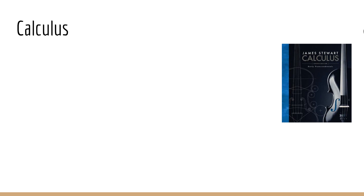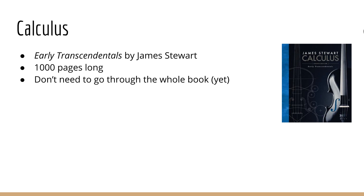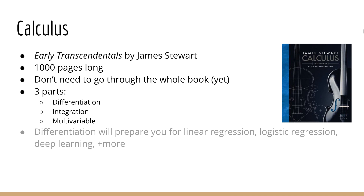For calculus, I recommend the book Early Transcendentals by James Stewart. Now you might look at this book and think: this book is 1,000 pages long, I'm never going to finish this. Luckily, you don't have to go through the whole book. If you want to fast-track into machine learning, you can focus on certain parts. Calculus can be split into three parts roughly: differentiation, integration, and multivariable calculus, which does both differentiation and integration with multiple variables. For most of machine learning, you will mostly need differentiation. So if you focus on differentiation in one and multiple dimensions, this should prepare you for topics such as linear regression, logistic regression, and deep learning — that would be all of part one and part of part three.